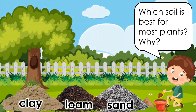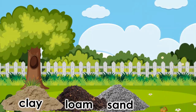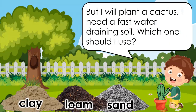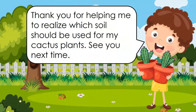Which soil is best for most plants? Why? Loam is the best soil for most plants because it contains humus and it holds enough water needed by the plants. But I will plant a cactus. I need a fast water draining soil. Which one should I use? Wow! You're amazing! Thank you for helping me to realize which soil should be used for my cactus plants. See you next time! Bye!